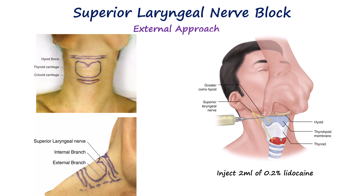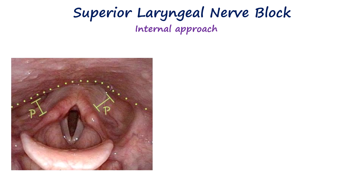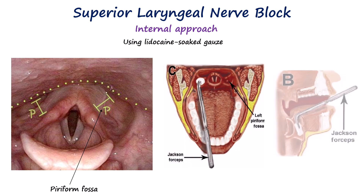As with all blocks, careful aspiration must be performed prior to the injection, especially as the carotid artery is in close proximity. The internal approach uses gauze or pledgets soaked in local anesthetics and placed in the piriform fossa using forceps. These gauze or pledgets need to be kept in place for 5–10 minutes to allow sufficient time for the local anesthetic to take effect.